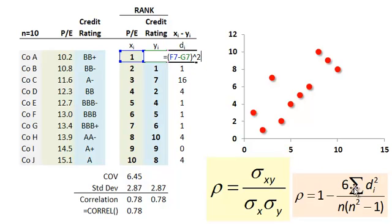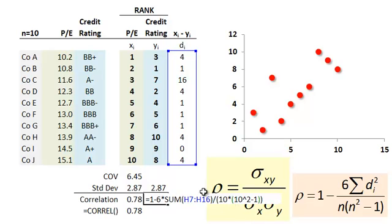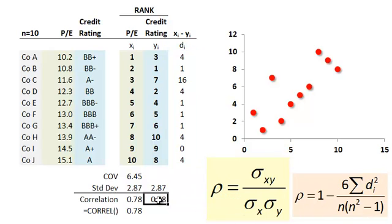And then if I come down here, summation on that is the numerator divide by N 10 times 10 squared minus 1. So you can see this fraction is implemented right here. And I get the same 0.78 for a Spearman's rank correlation.